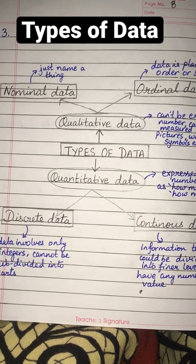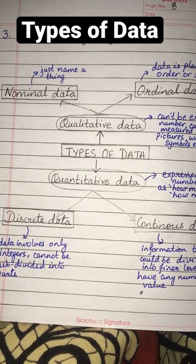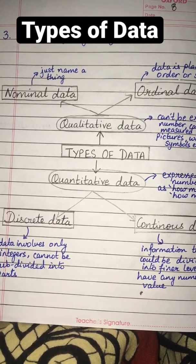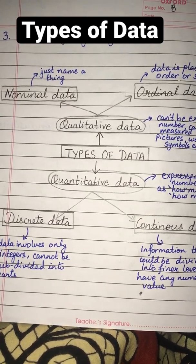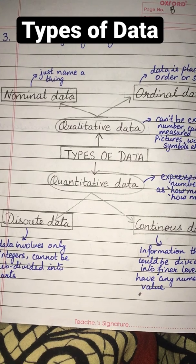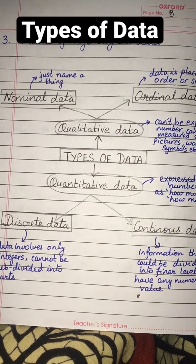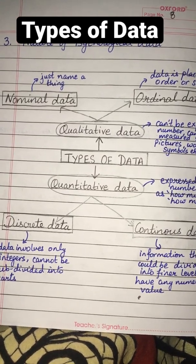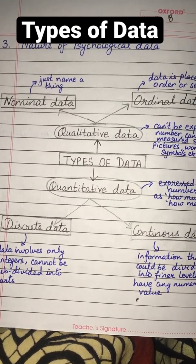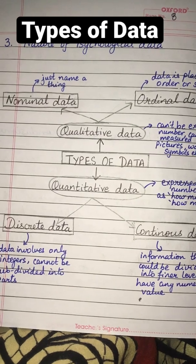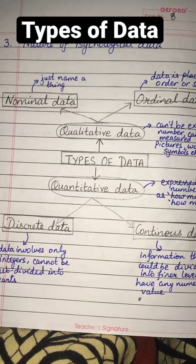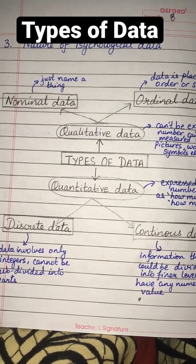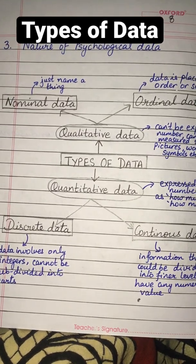Discrete data involves only integers and cannot be subdivided into parts. For example, the number of children in a class, which can be 20, 25, 30, or 35, but cannot be 30.5 or 31.5.